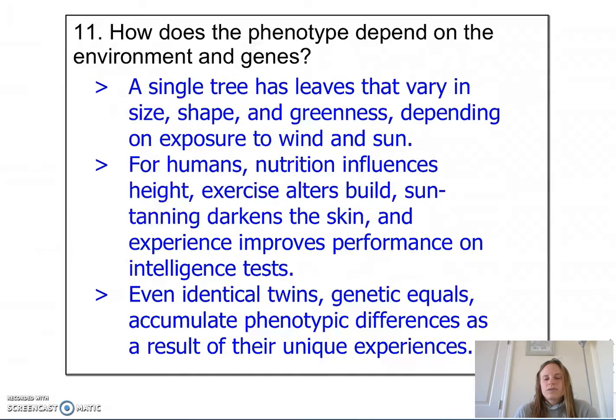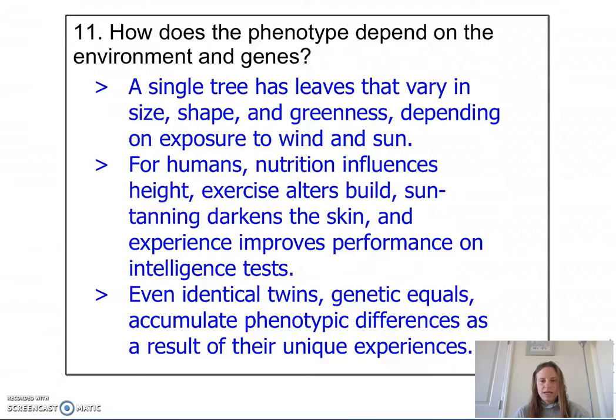Darker skin near the equator means they will absorb heat but actually reflect harmful UV radiation. As you move further away from the equator, a person's skin generally gets lighter so that they will absorb more UV radiation in order to get the essential vitamin D that comes from the absorbance of UV radiation.